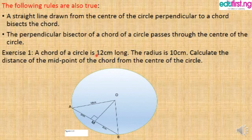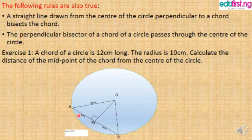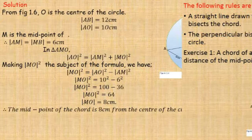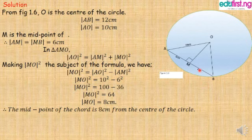A chord of a circle is 12 cm long. This chord is 12 cm long, so if we divide it into two equal halves, each half will be 6 cm. The radius is 10 cm. From the theorem we proved, this means both OA and OB are radii of 10 cm. Calculate the distance of the midpoint of the chord from the center of the circle. From figure 1.6, O is the center of the circle.